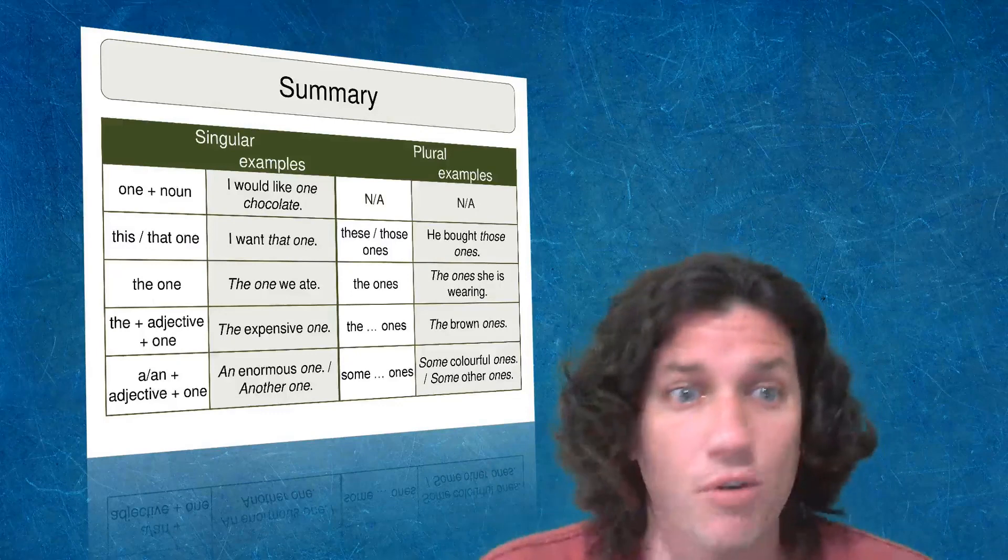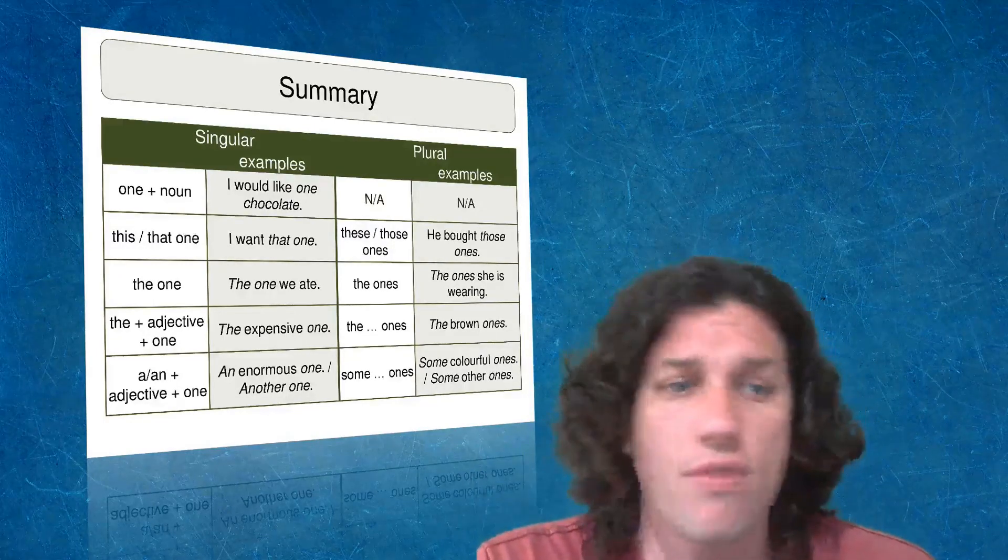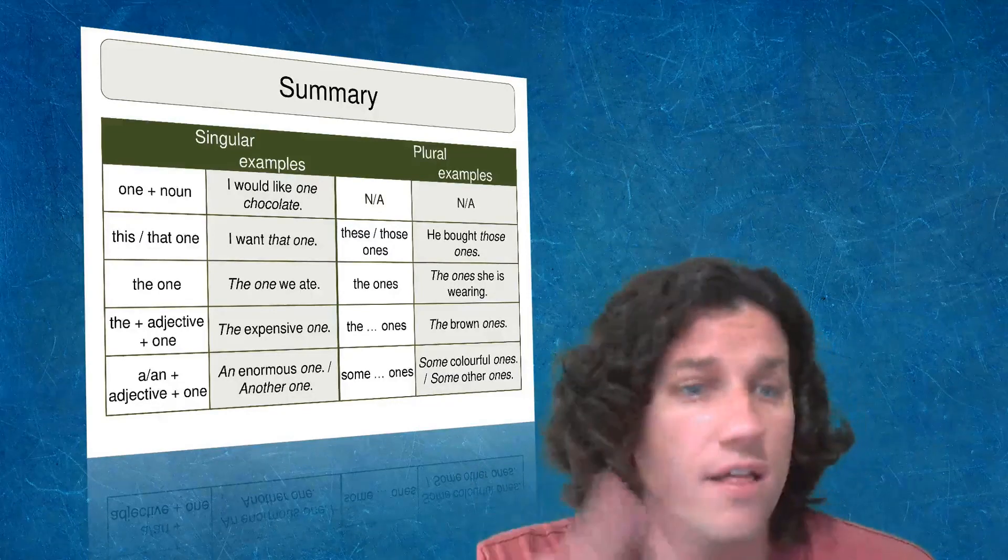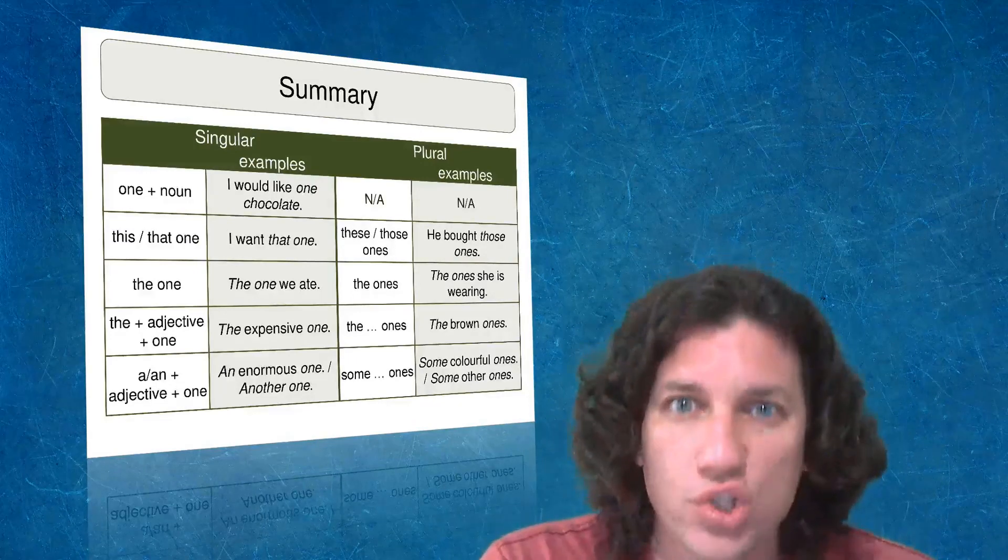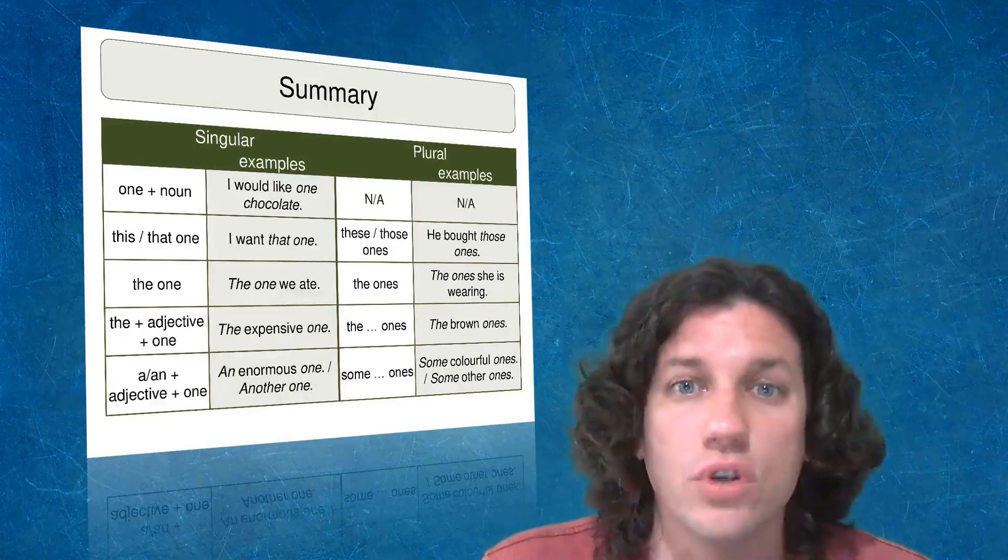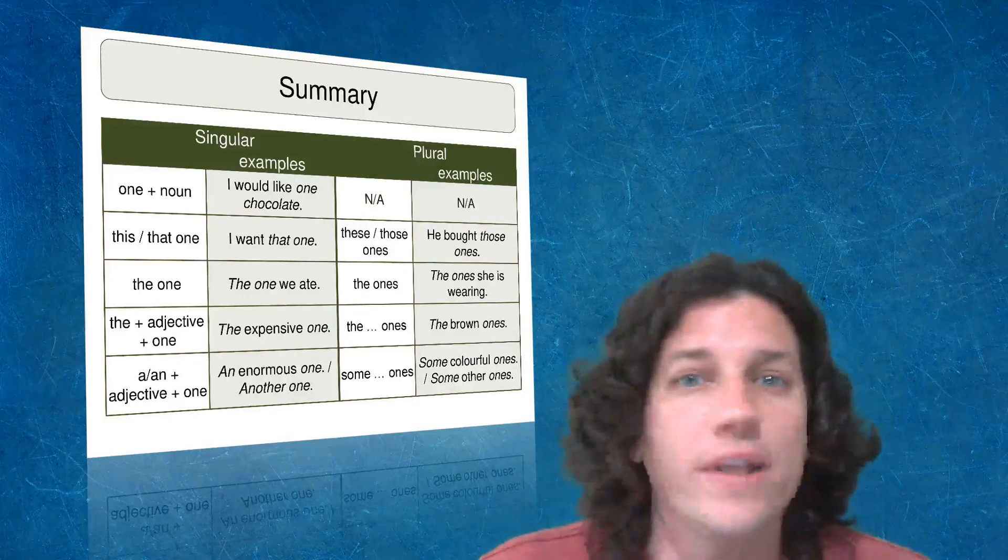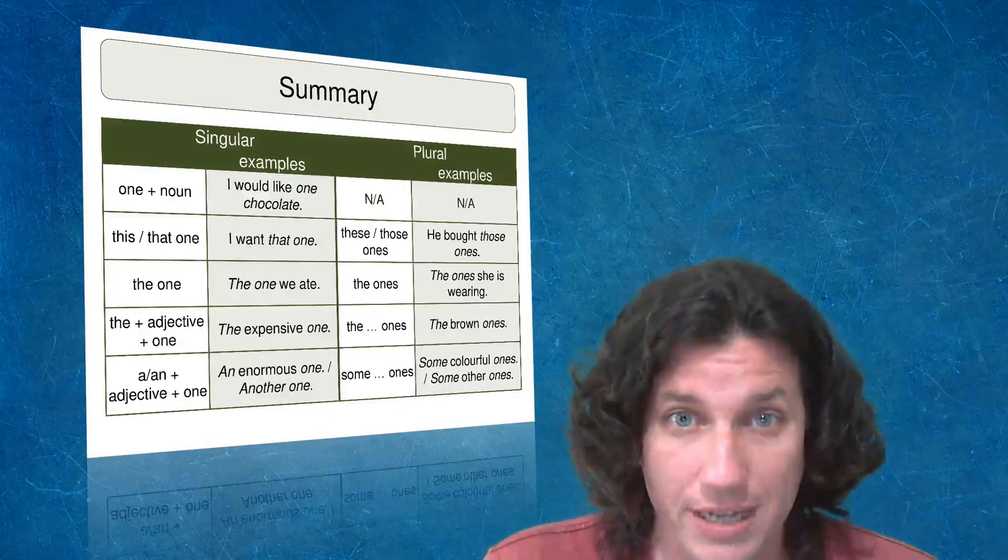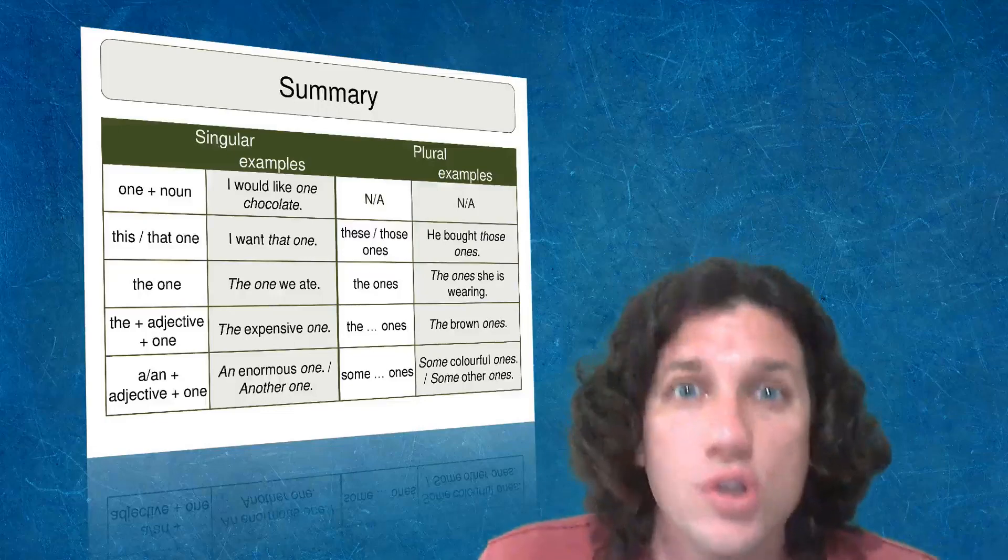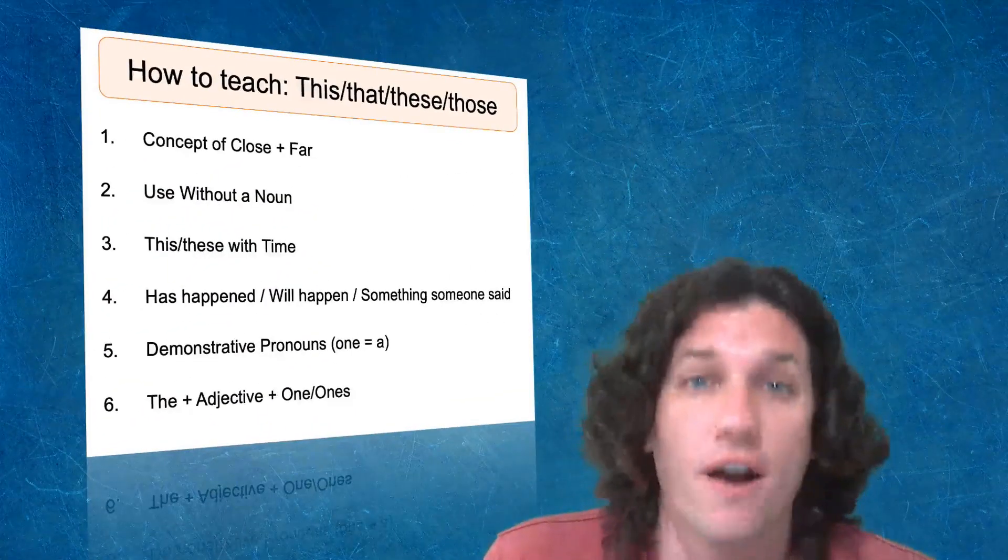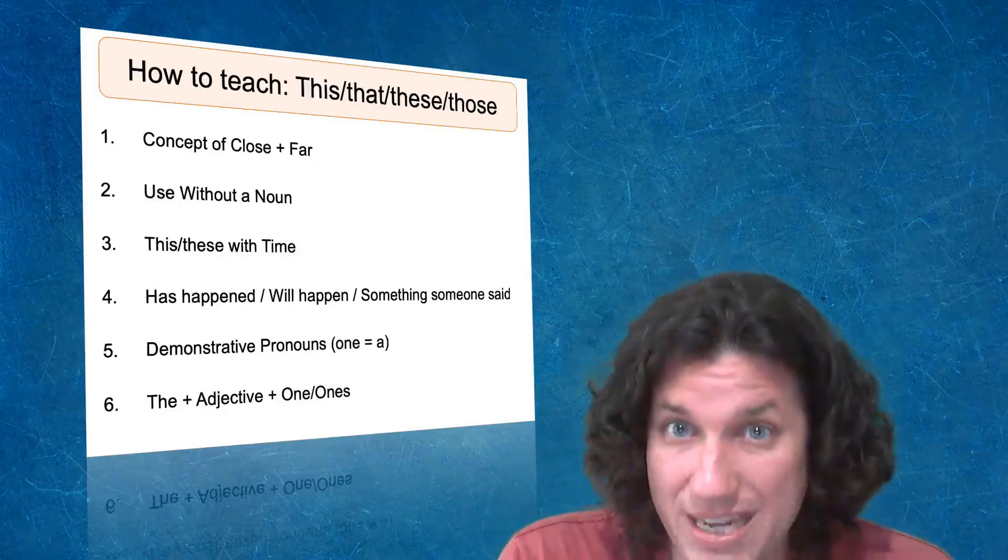So here I'm showing a summary slide that shows singular examples and plural examples of one plus noun, this one, that one, the one, the adjective plus one or ones. And if you show your student this too soon, or you try to do this with your student too soon before going through all of the key concepts one by one, it's going to make for a frustrating experience. So for you to be able to teach these things effectively, go one by one through each of the six key concepts.